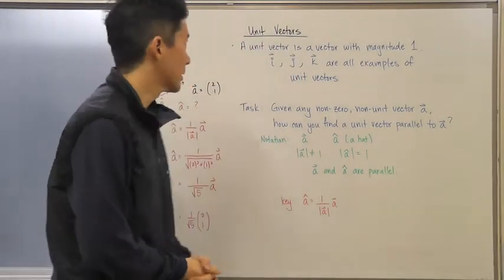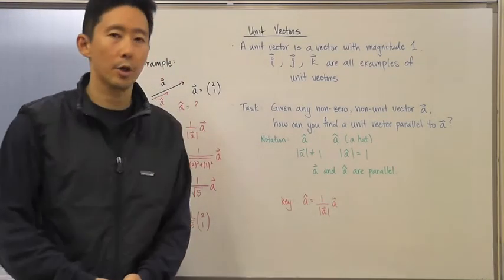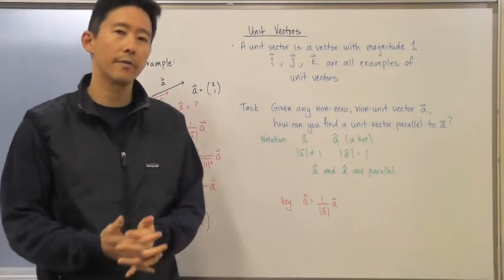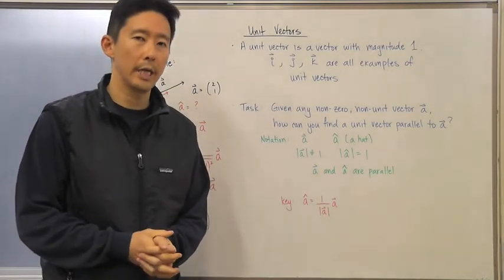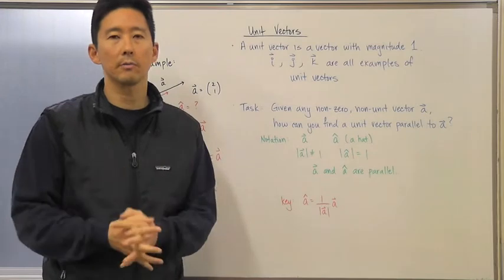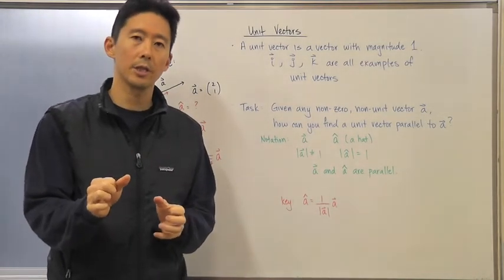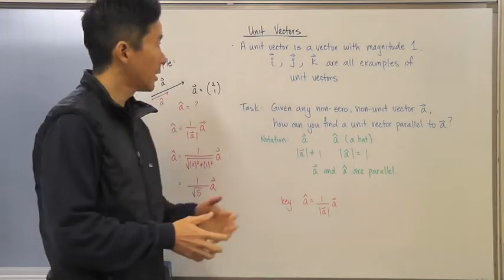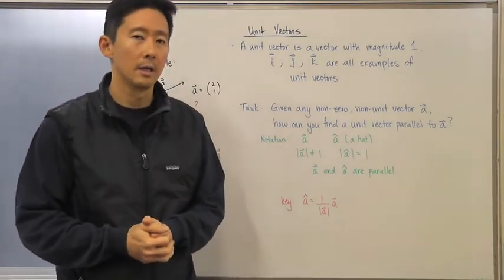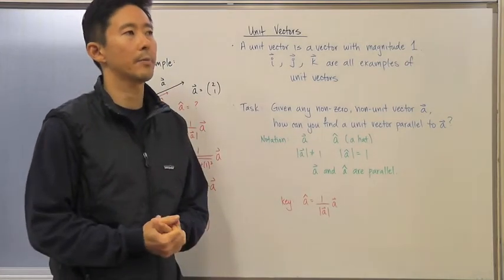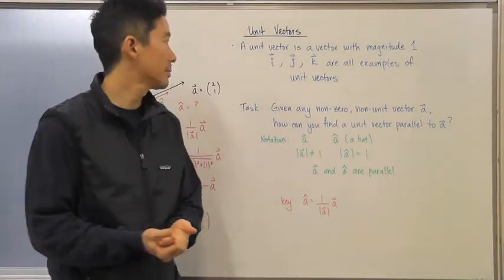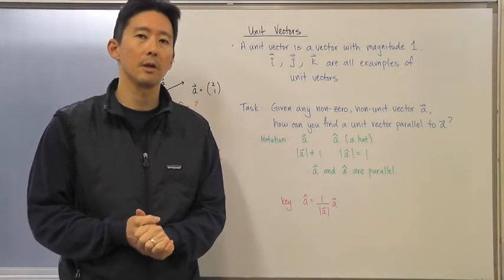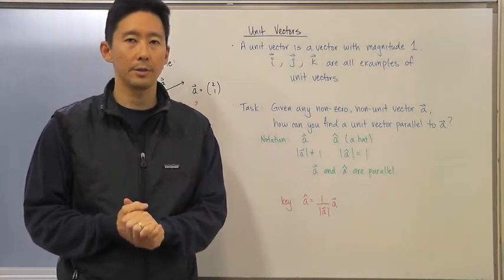Let's take a look at our next section, which is called unit vectors. Basically, a unit vector is a vector with a magnitude of one — just like the unit circle, where the center is at the origin and the radius is equal to one. If we think about some vectors we already know that are unit vectors, we can talk about i, j, and k. All of those are examples of unit vectors because all of them have a magnitude of one.